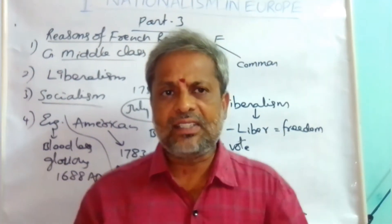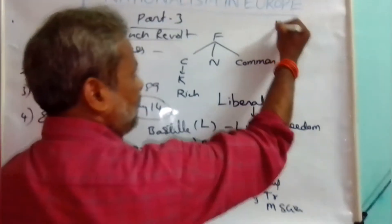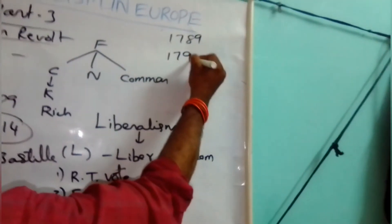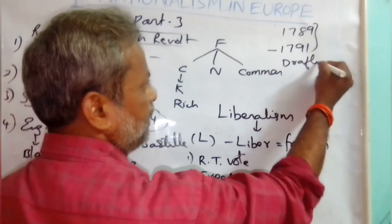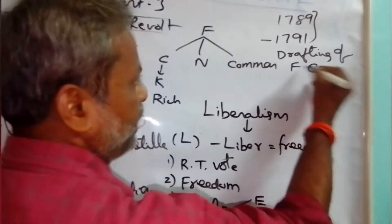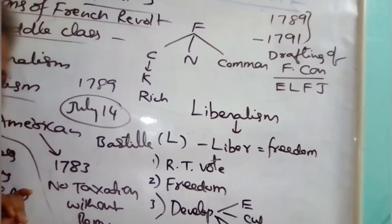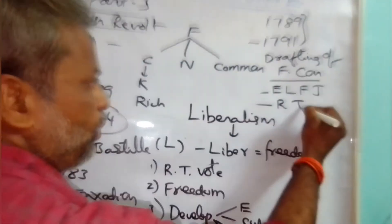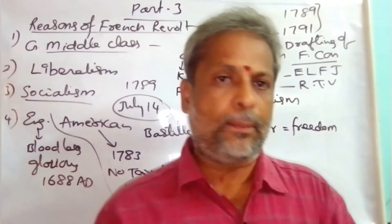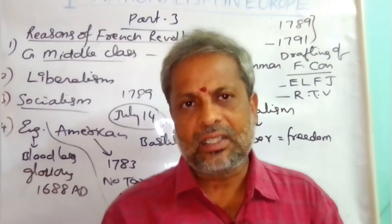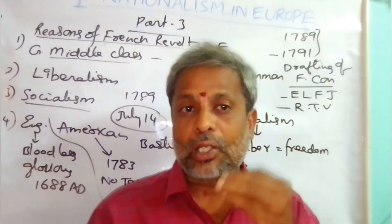After 1789, significant political changes occurred in France. From 1789 to 1791, the French people engaged in drafting the French Constitution, which gave top priority to equality, liberty, fraternity, and justice, and also provided the right to vote to the people — though this right to vote did not last many years. In 1791–92, the liberal government was established in France and people were ruled by liberal leaders.